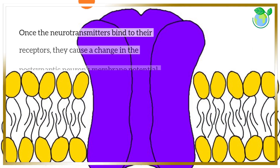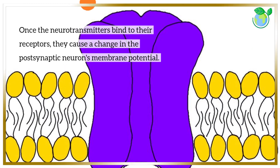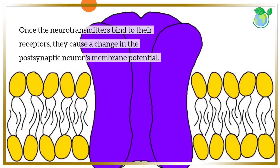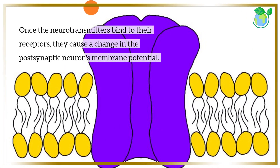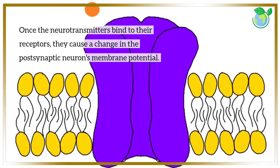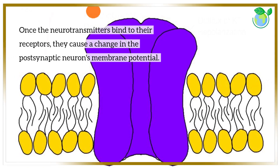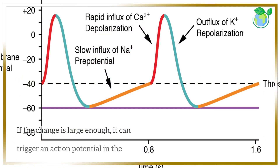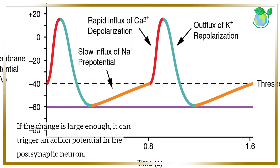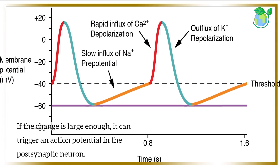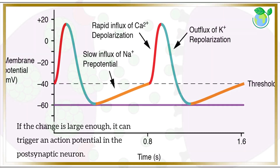Once the neurotransmitters bind to their receptors, they cause a change in the postsynaptic neuron's membrane potential. If the change is large enough, it can trigger an action potential in the postsynaptic neuron.